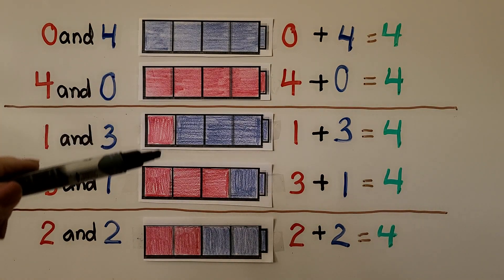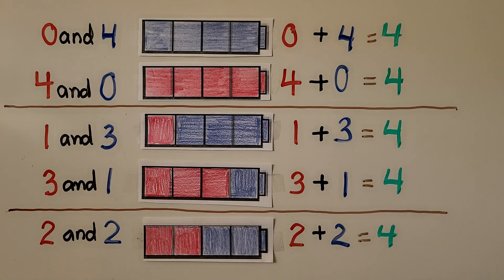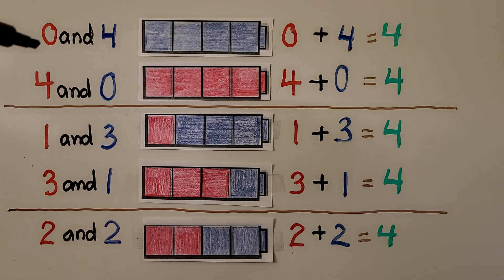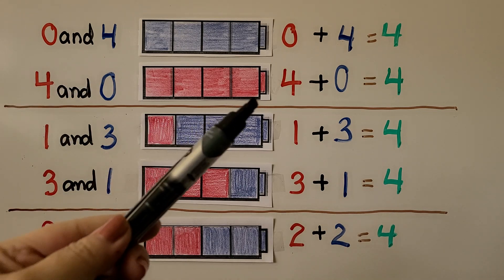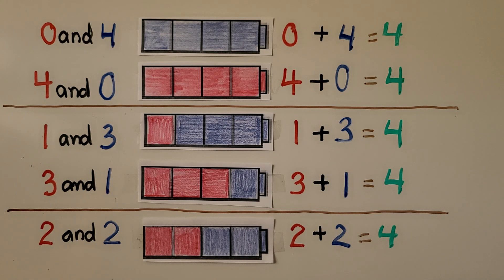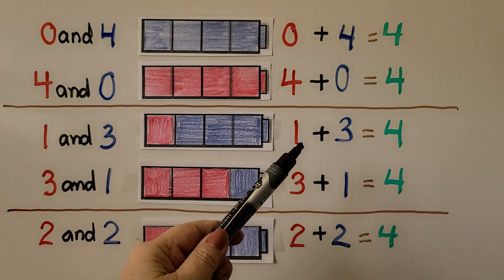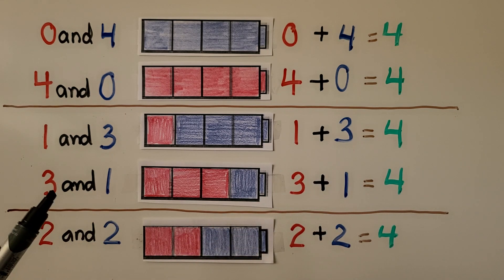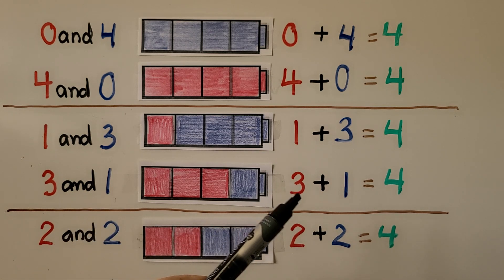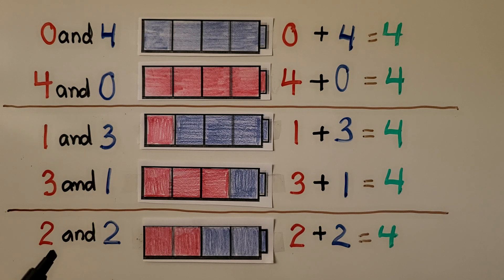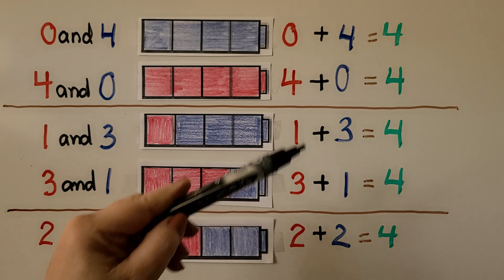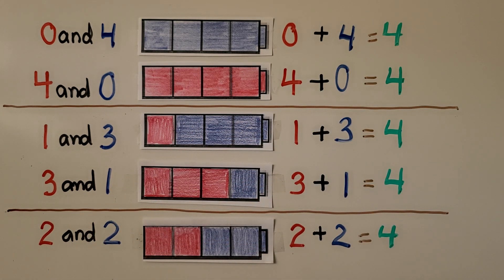Here we have cube trains and they all have 4. Different number pairs can be used for the same sum — all of these have the sum 4. We can use 0 red and 4 blue for 0 plus 4, equals 4. Or 4 red and 0 blue for 4 plus 0, equals 4. Or 1 and 3 for 1 plus 3 equals 4, or 3 red and 1 blue for 3 plus 1 equals 4. We can even do 2 and 2 for 2 plus 2 equals 4.